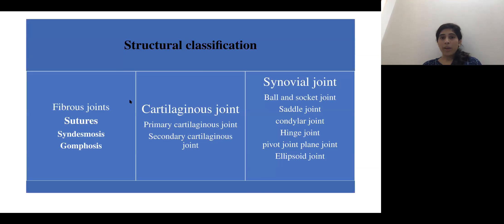The fibrous type of joint is divided into sutures, syndesmosis, and gomphosis.